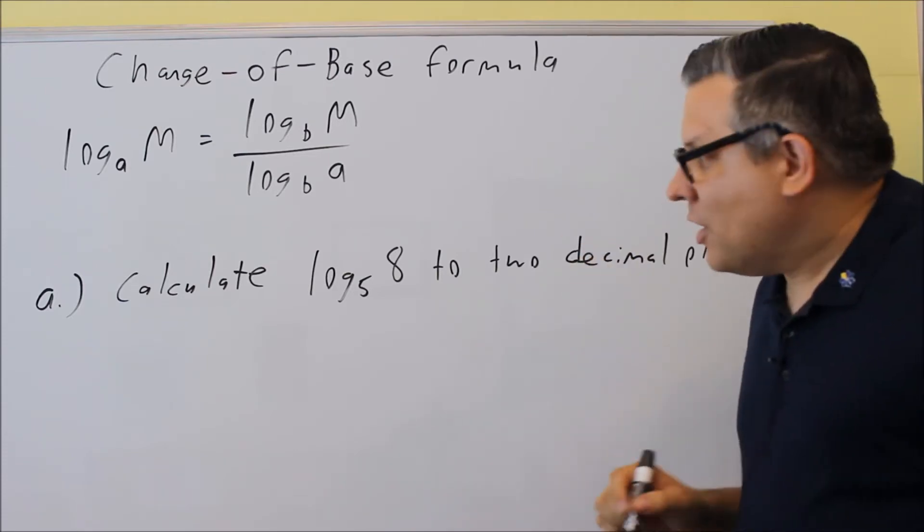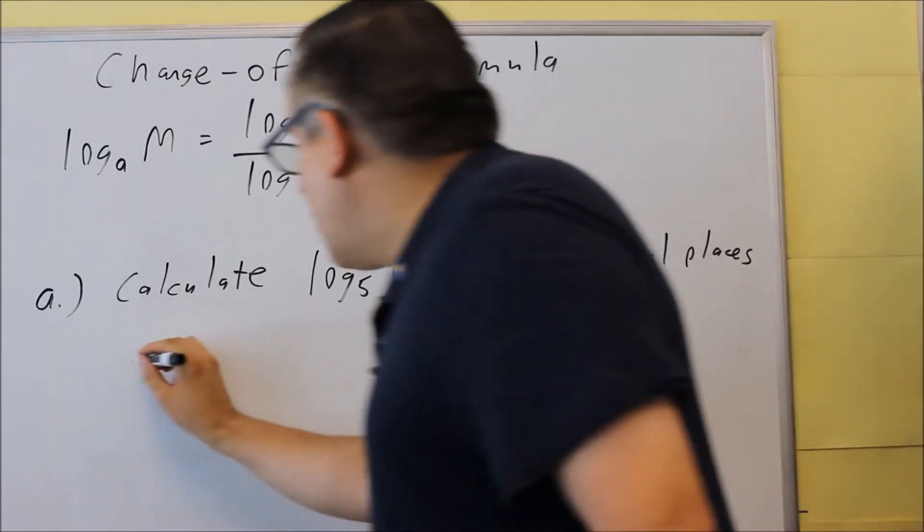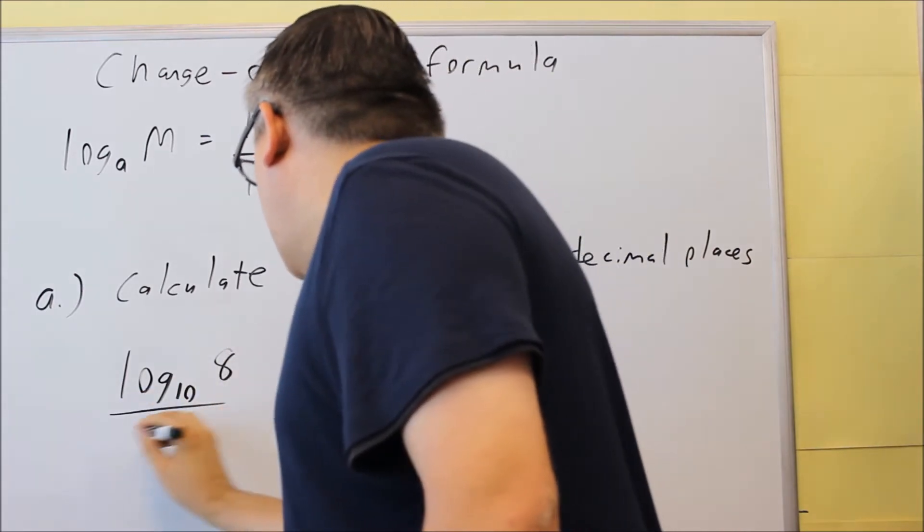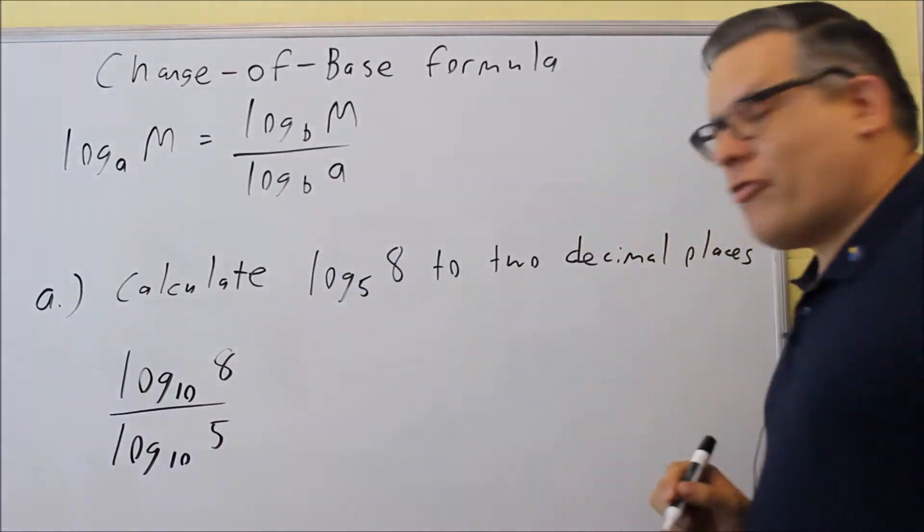I could do it all with log base 10 or I could do it all with log base E using LN. Doesn't really matter. Let's do the first one with log base 10. So I'm going to do log base 10 of the big number 8 divided by log base 10 of the bottom number 5.